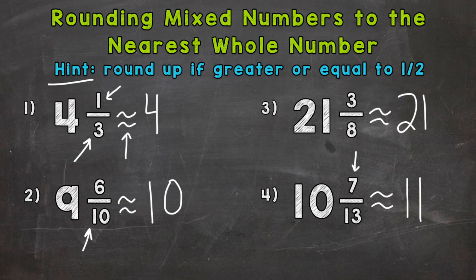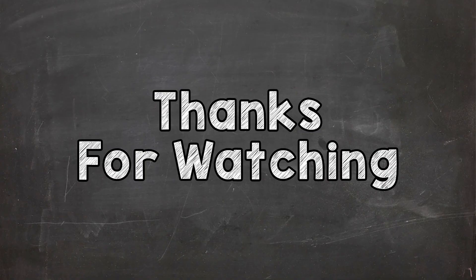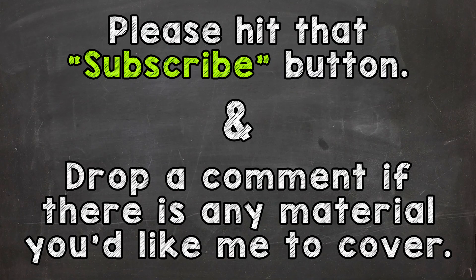So there you have it. There's how you round mixed numbers to the nearest whole number. This hint, again, up here is the most important part. Take a look at your fractional part. If it's greater or equal to a half, you round up as far as that whole number goes. If it's less than a half, then you stay the same. I hope that helped. Thanks so much for watching. Until next time, peace.